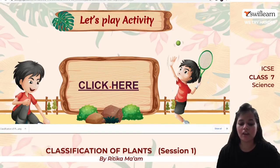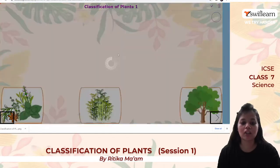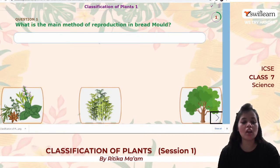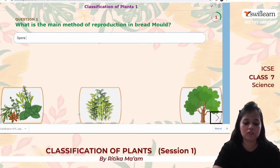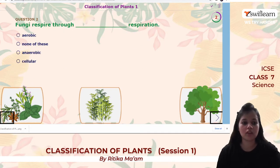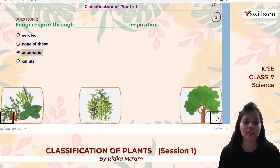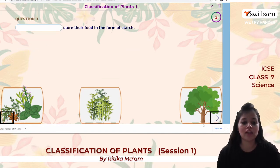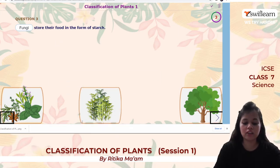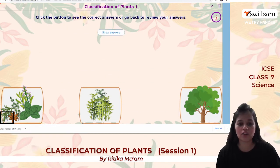Let's do a quick activity on what we have learned. The main method of reproduction in bread mold is spore formation. Fungi respire through anaerobic respiration. And fungi store their food in the form of starch.